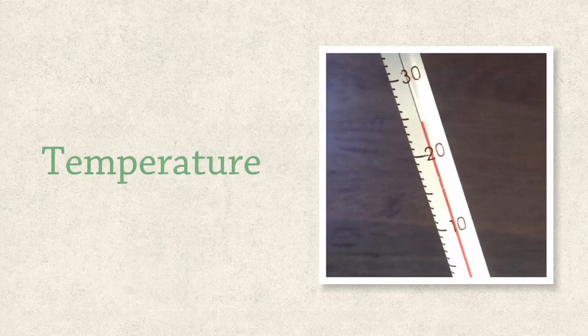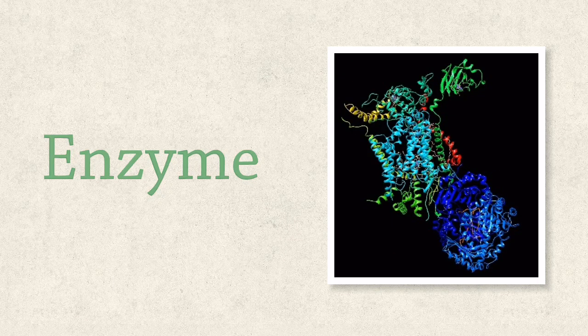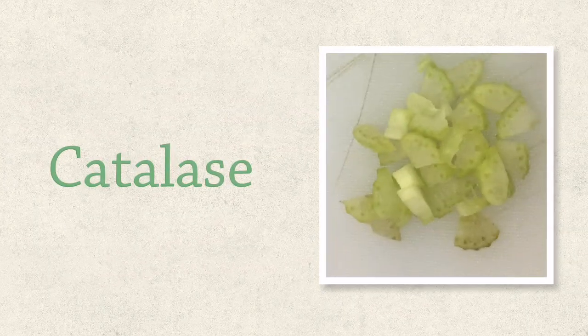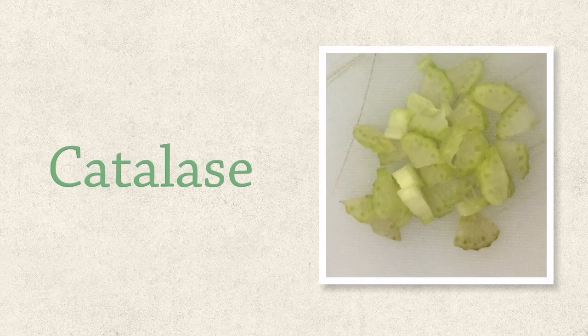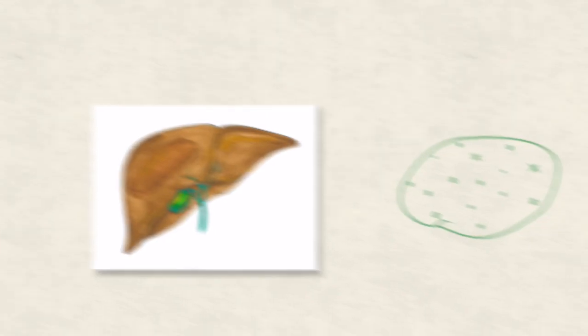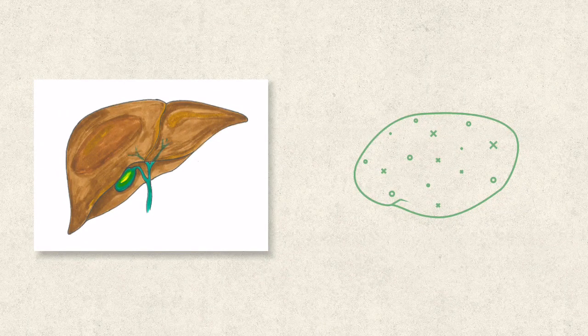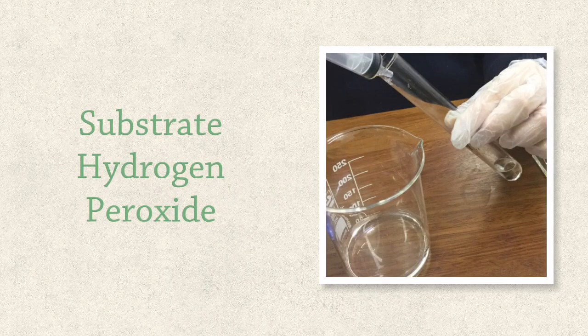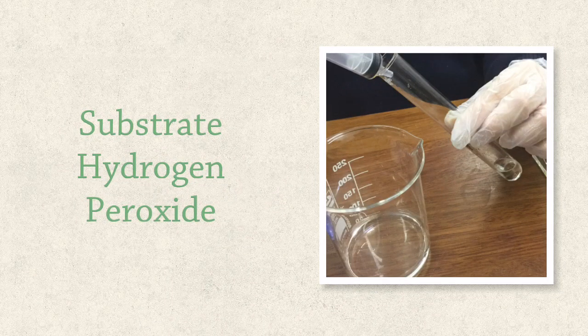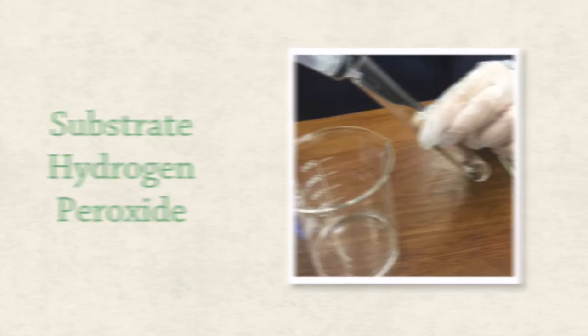Let's see how altering temperature affects enzyme activity. For all of the practicals on enzymes we used one particular type of enzyme. We used catalase and the source of that catalase was fresh celery. You can also find catalase in liver and in potatoes. The substrate was hydrogen peroxide and hydrogen peroxide will break down to give you water and oxygen.